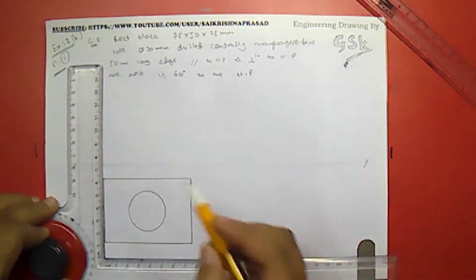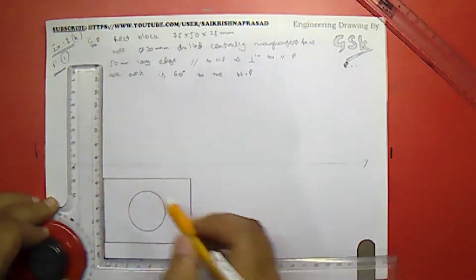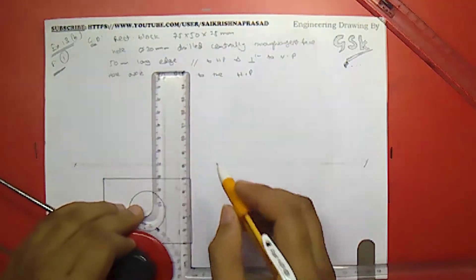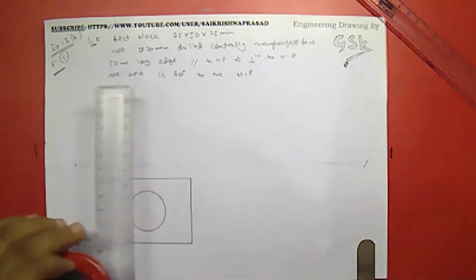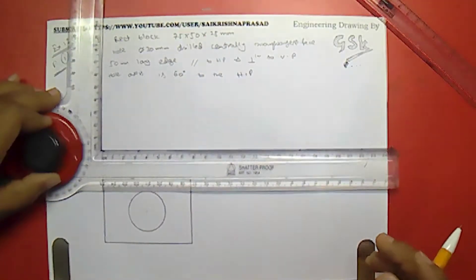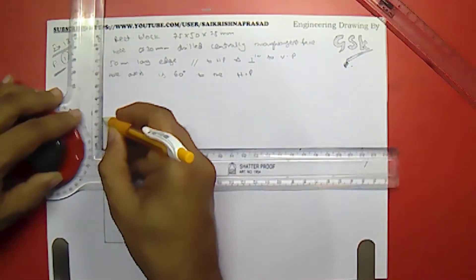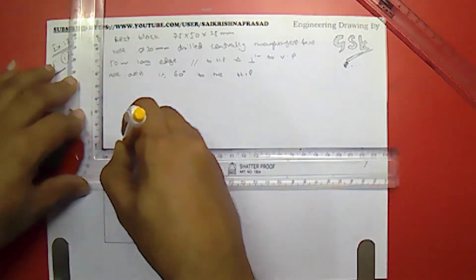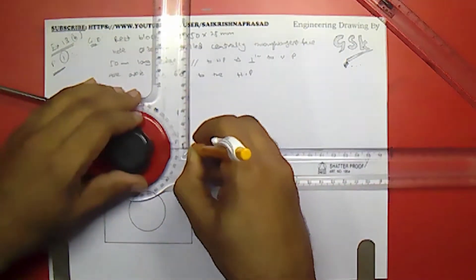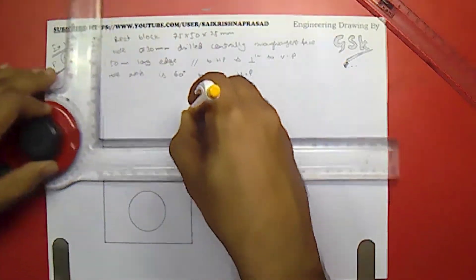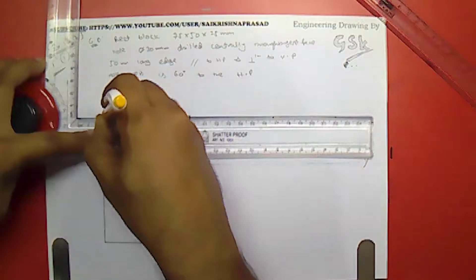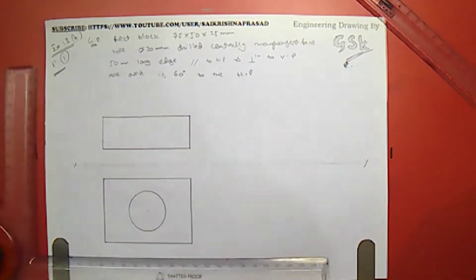Now I will project this to the opposite view. We have finished with the HP. The thickness of the block is 25mm.